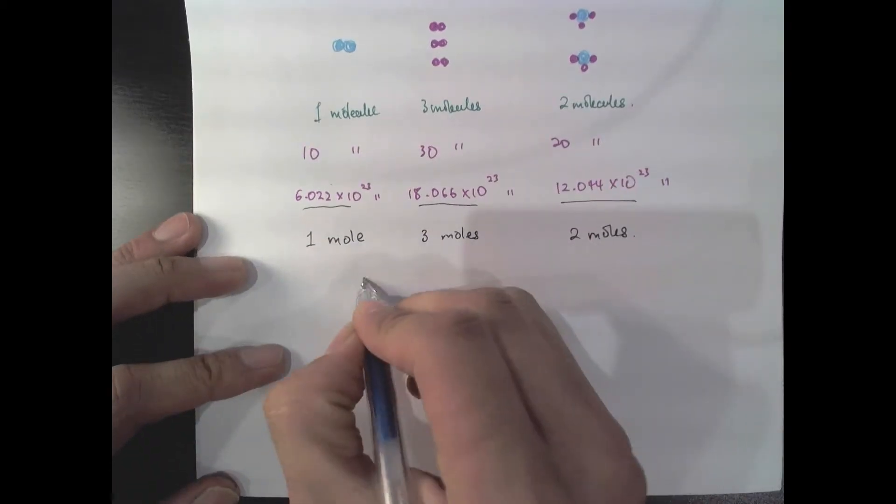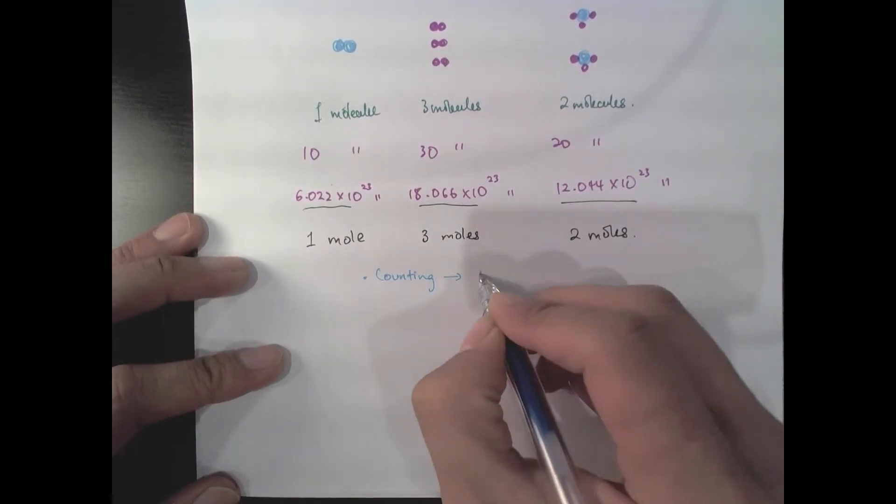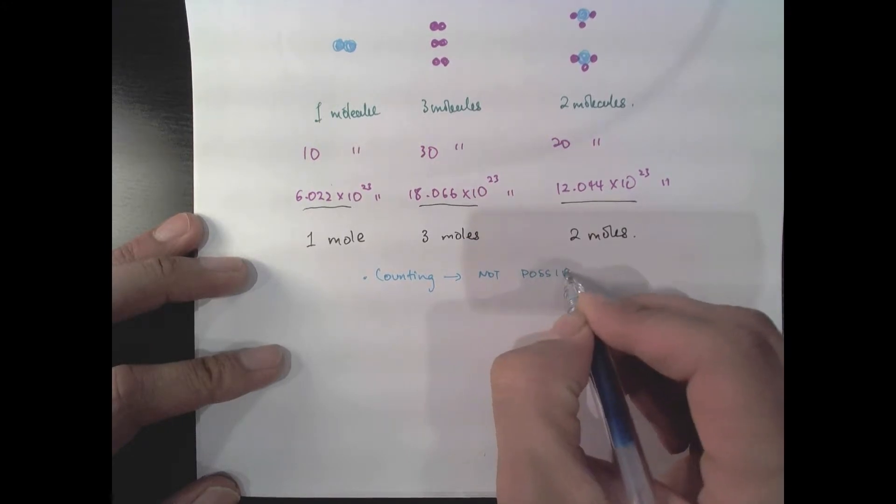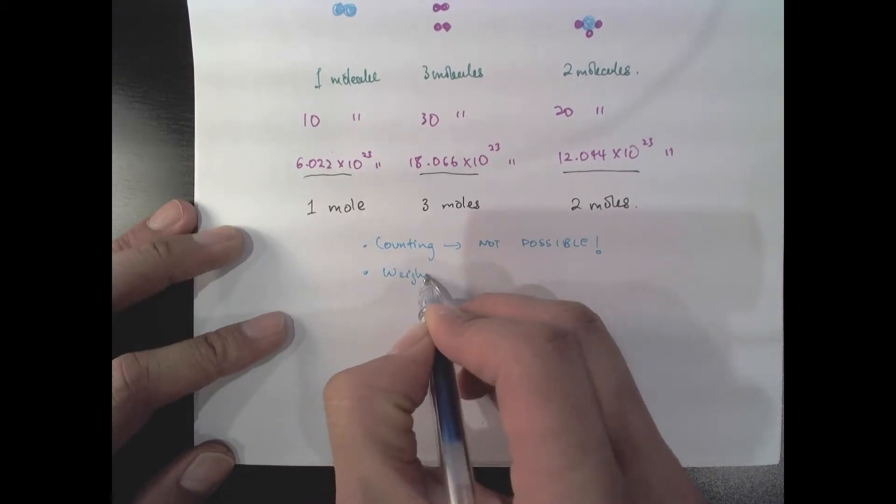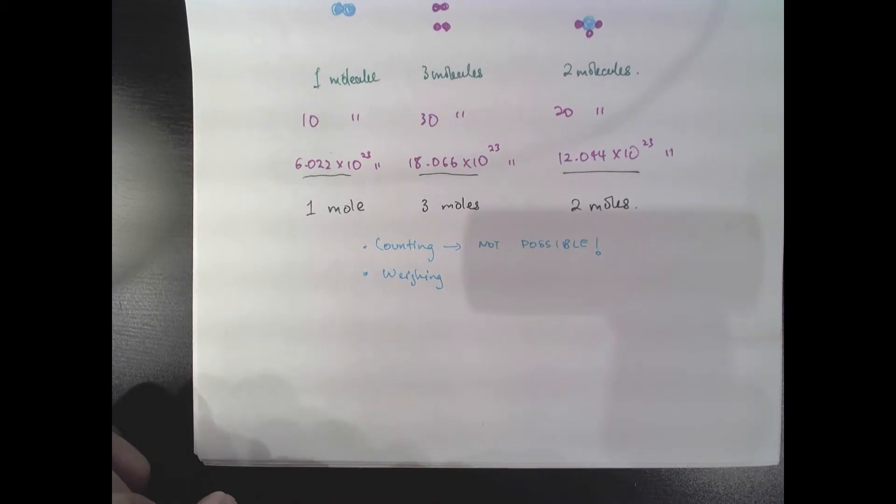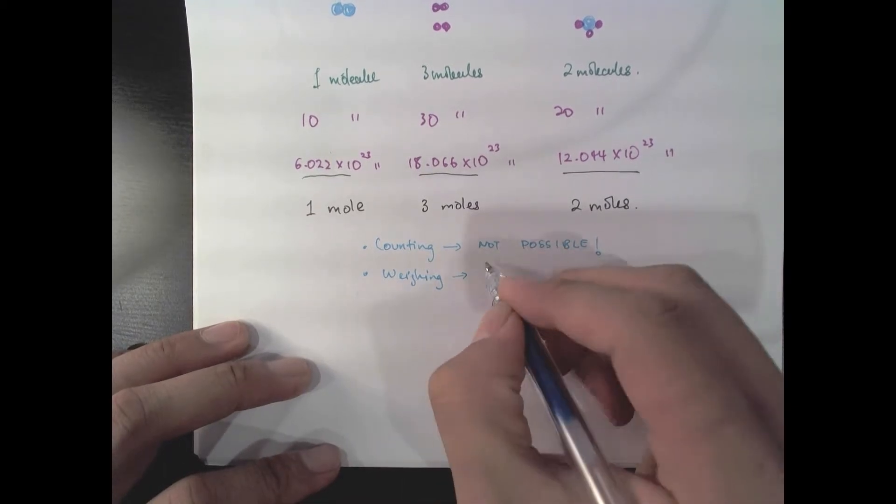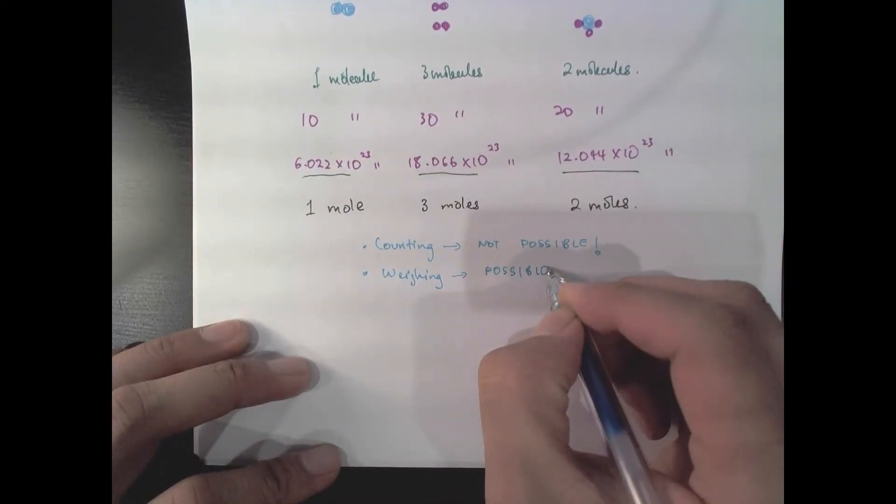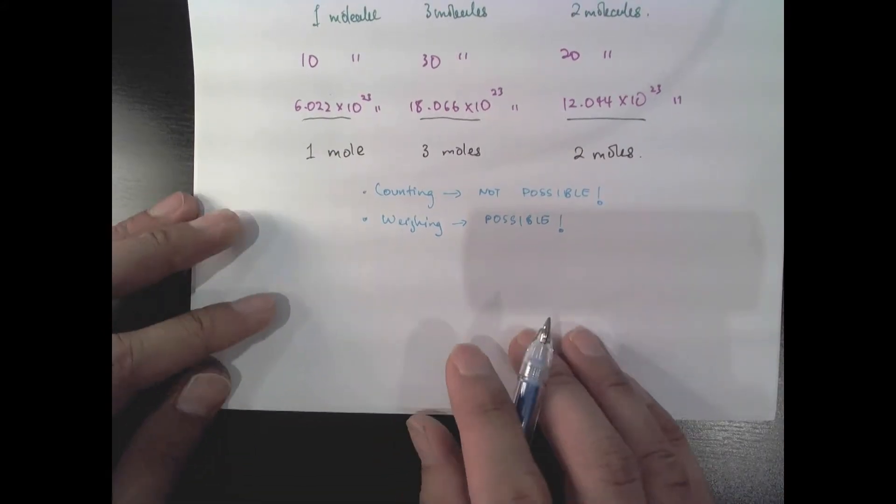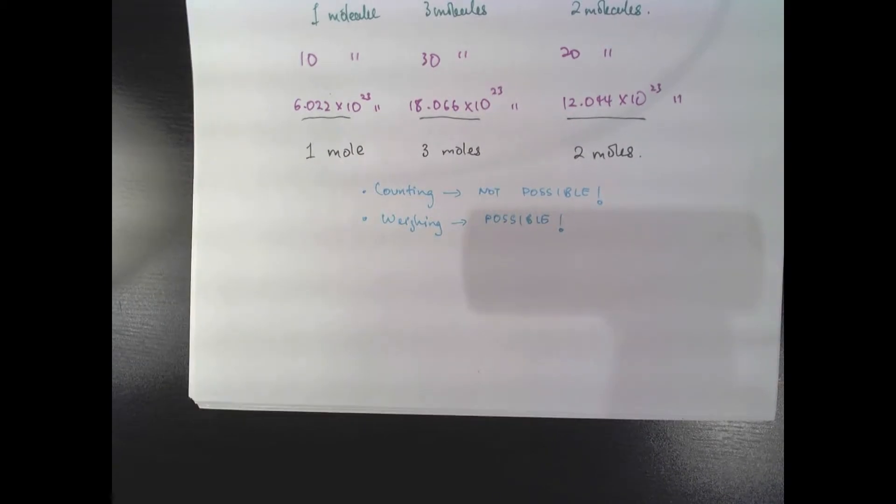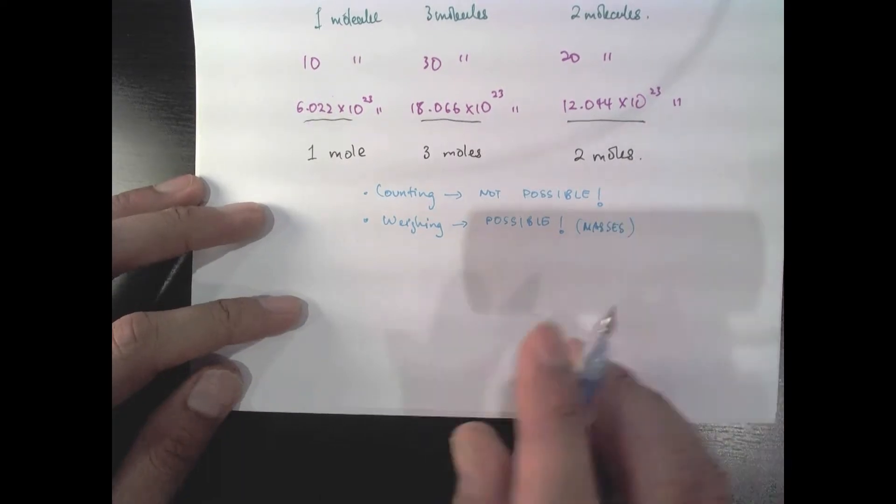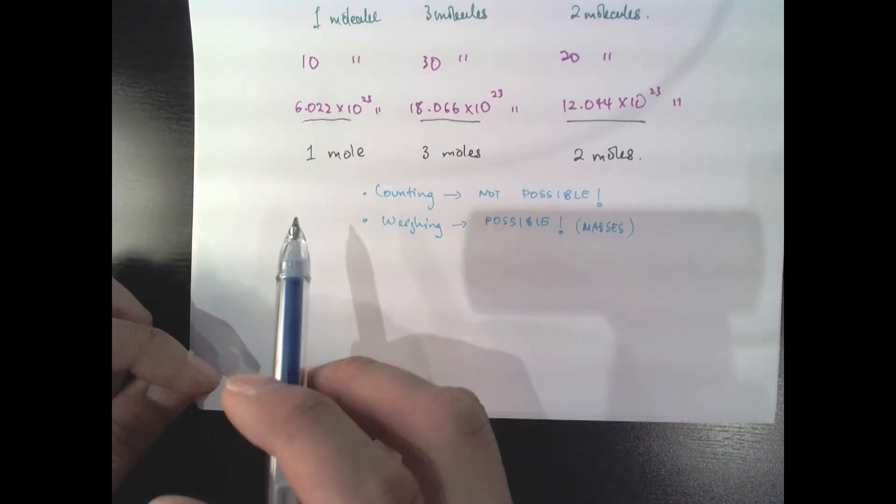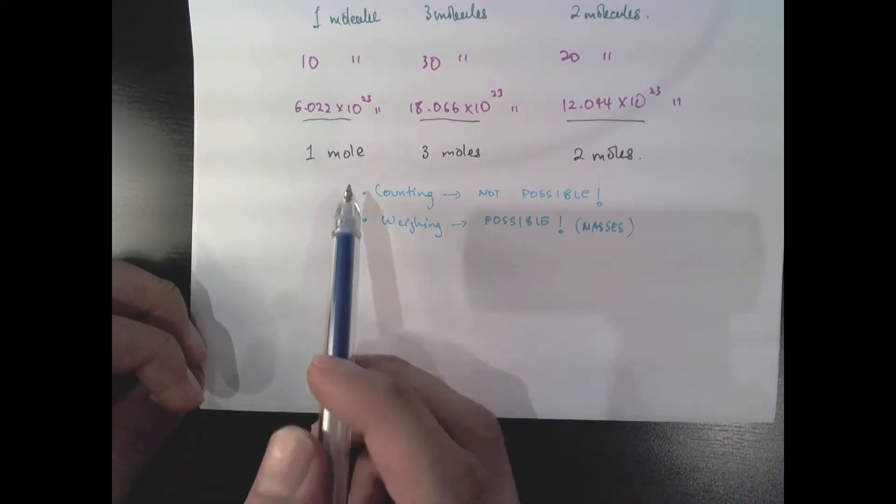Now, even so, counting atoms is not feasible in the lab. Counting is not really possible in the lab. But instead, what we can do, what we usually do in the lab is we tend to weigh our reagents. We weigh our chemicals. We can do that feasibly using a weighing scale.